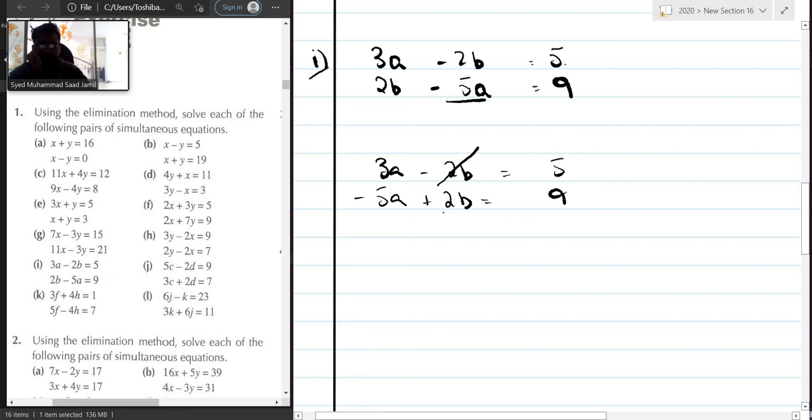So minus 2b plus 2b gets cancelled out, and then you have 3a minus 5a is minus 2a is equal to 5 plus 9 is 14. a is equal to 14 divided by minus 2. So a is equal to minus 7.